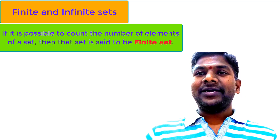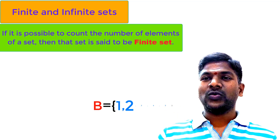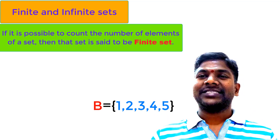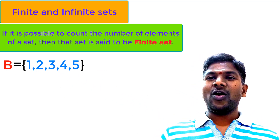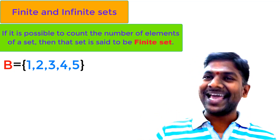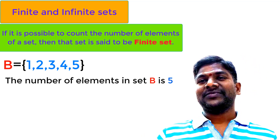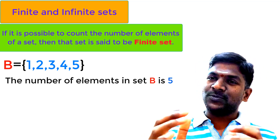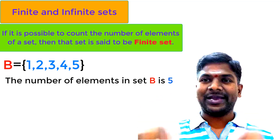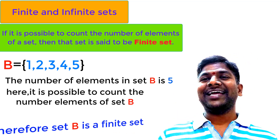Let us understand the concept of a finite set by some examples. Take a set B = {1, 2, 3, 4, 5}. How many elements are in the set? Exactly 5 elements. So here it is possible to count the number of elements in set B, and therefore B is a finite set.